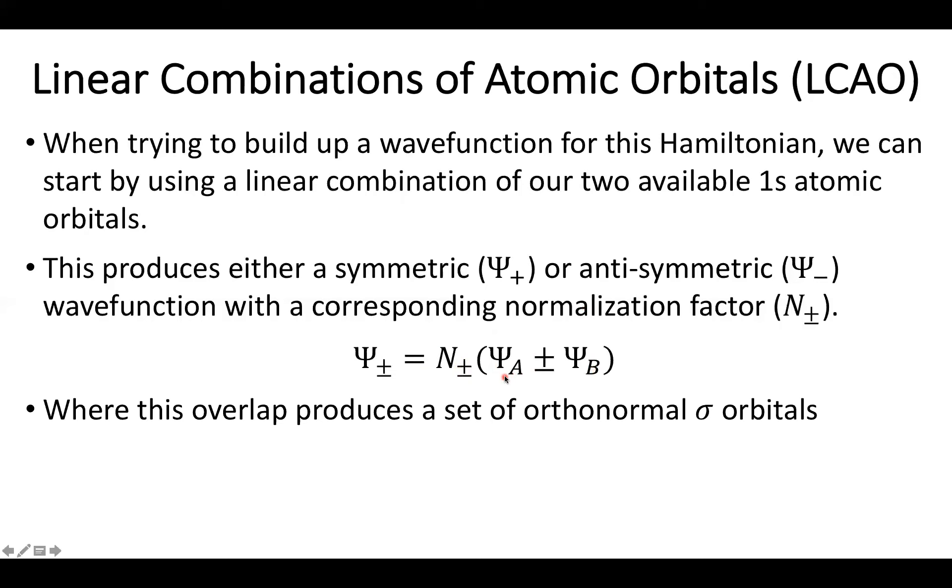we don't know how orthogonal they are with each other, which is what's going to produce an overlap, which we're interested in because this is how we define a sigma bond, like we've seen before in valence bond theory.